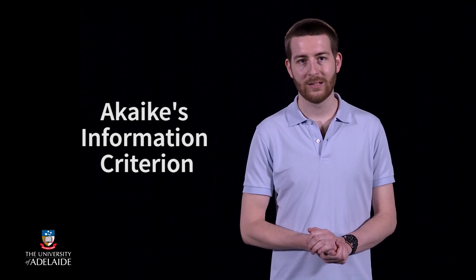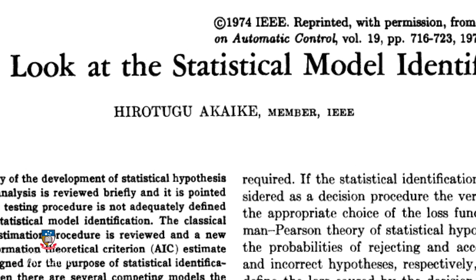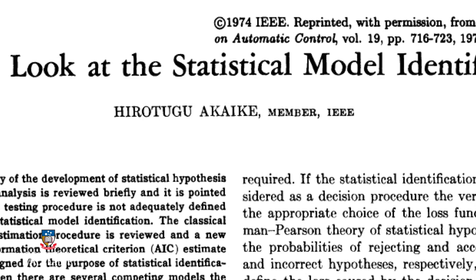AIC is Akaike's information criterion, developed by the famous Japanese statistician Hirotugu Akaike. We can define AIC as: AIC = 2K minus 2 log L-hat, where log is the natural logarithm and L-hat is the probability of observing X given theta hat and M.